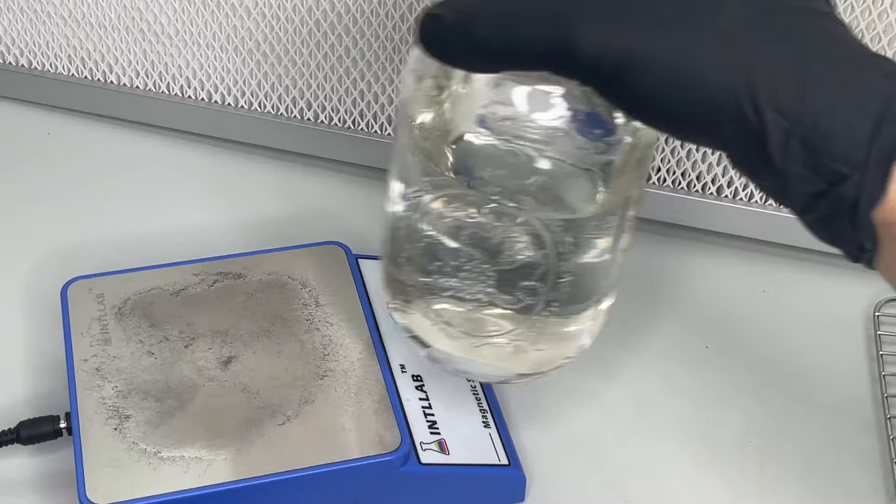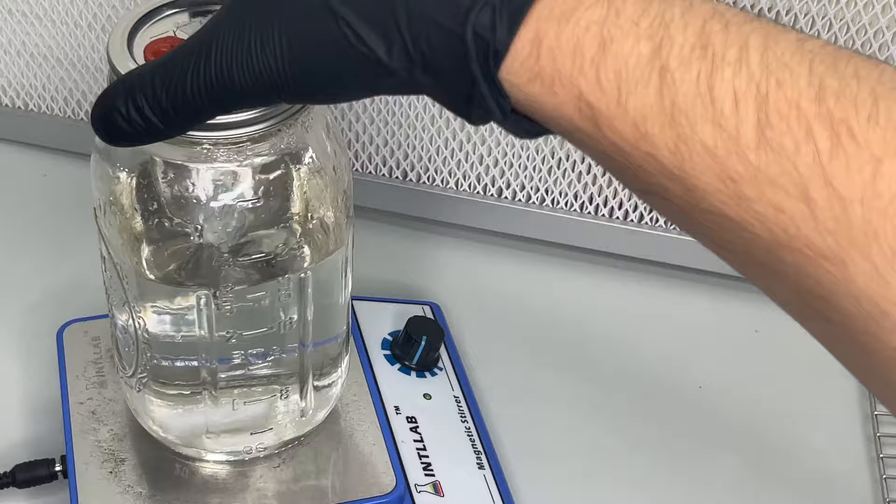After inoculating the liquid culture, you can use the magnetic stir plate one time before letting it colonize for the next week.